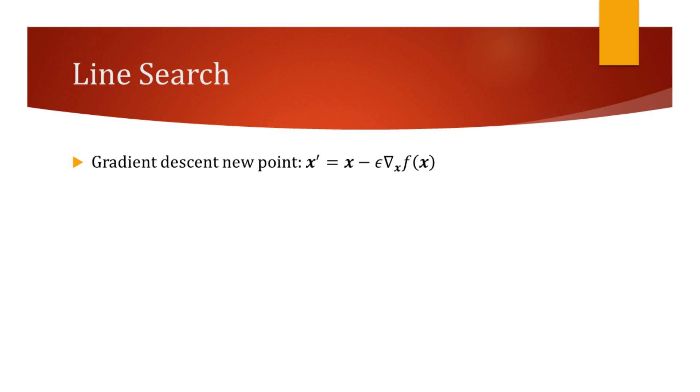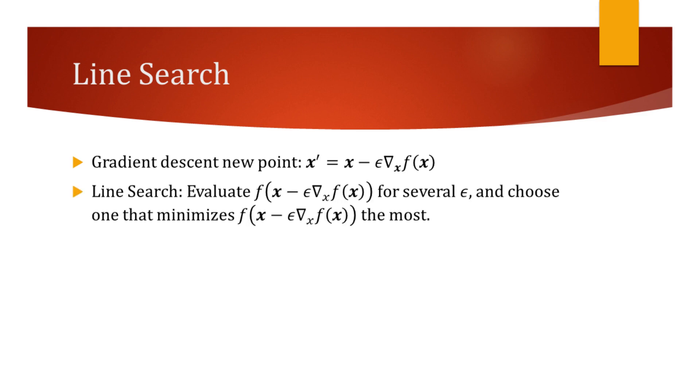By how much we move the point is determined by the step size, also known as learning rate, which in our formula is denoted as epsilon. There are several ways of choosing this parameter, one of which is a line search.